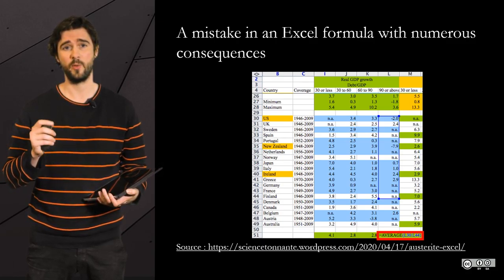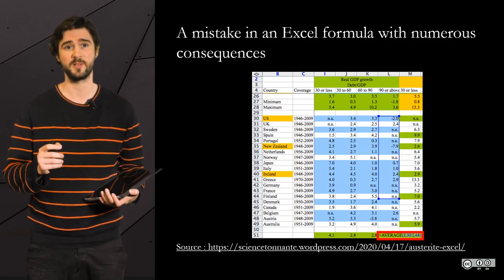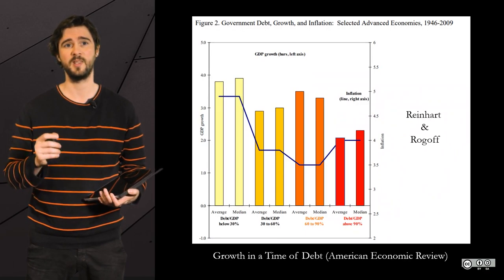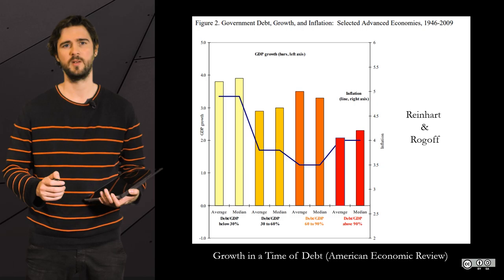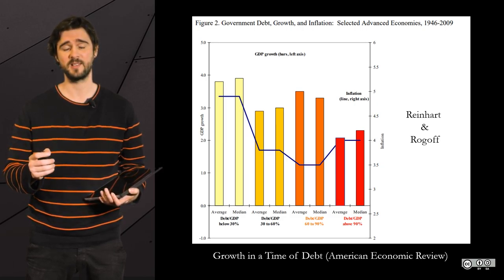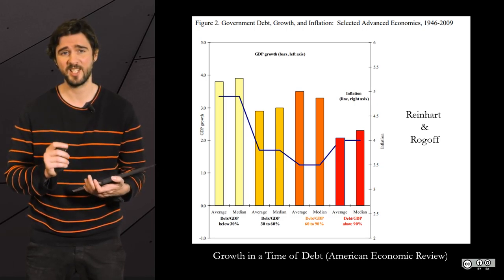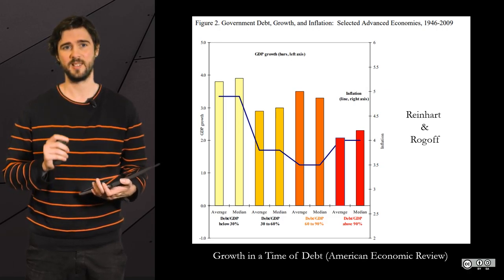And there it was, the reason behind the discrepancy between Herndon's results and the authors' results: a major mistake in the formula that led to omitting a quite significant subset of the dataset. When the mistake was corrected, the results changed drastically.